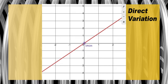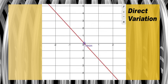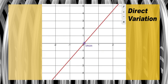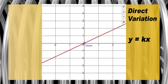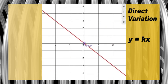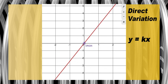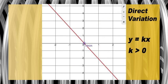A direct variation is a special type of linear function whose graph passes through the origin. The equation of a direct variation is of the form y equals kx, where k is the constant of variation. It also happens to be the slope of the line. This is an example of a direct variation where k is greater than zero, and this is an example where k is less than zero.